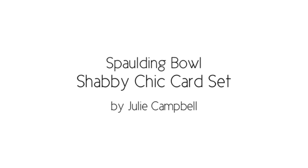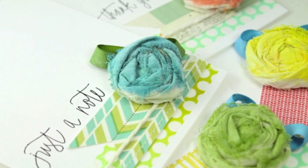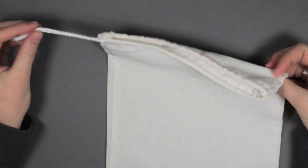Hi, this is Julie Campbell for Studio Calico. Today we'll be creating a shabby chic card set using the January card add-on called Spalding Bowl. The card add-on comes in a muslin bag that looks just like this.